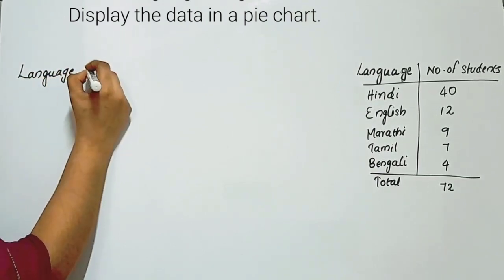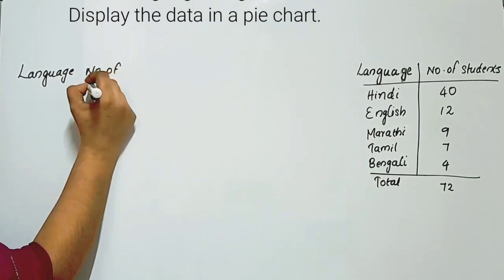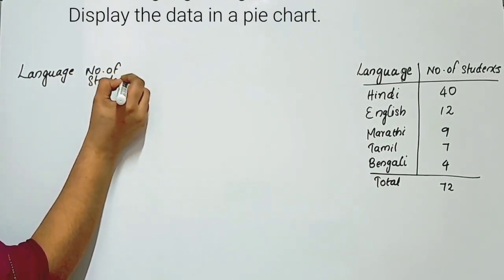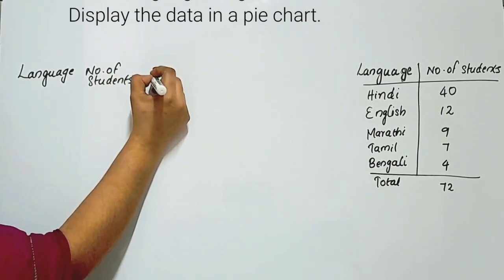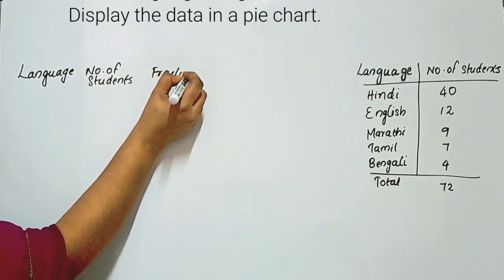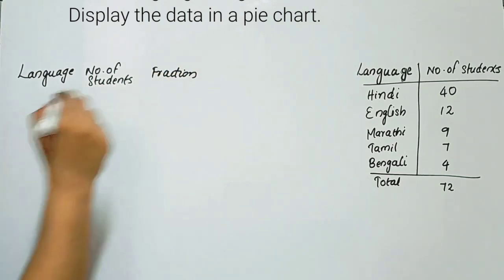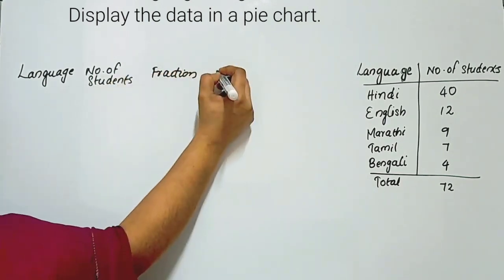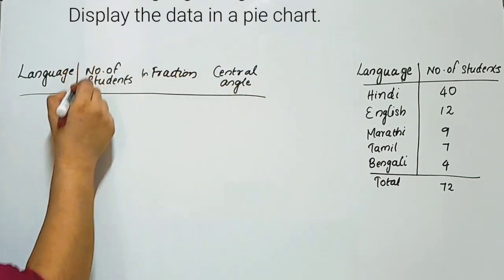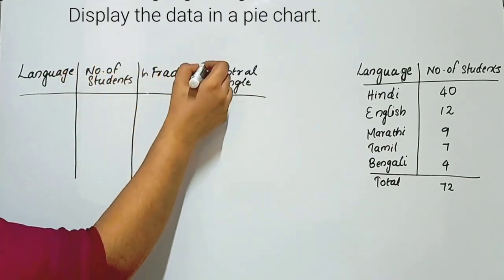The first column is language, the second column is number of students, the third column is fraction, and the last column is central angle. We will use this table.